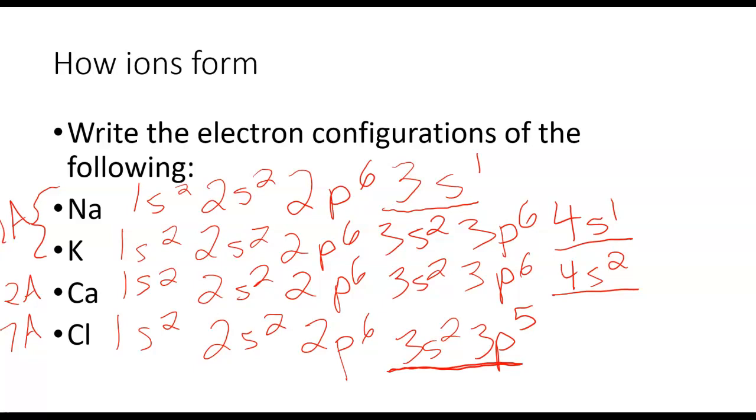So when these form an ion, what they want to do is they want to be like the nearest noble gas. So they either need to lose or gain electrons to be like the nearest noble gas. If we only have one valence electron, the easiest thing to be like a noble gas is just to lose this electron.